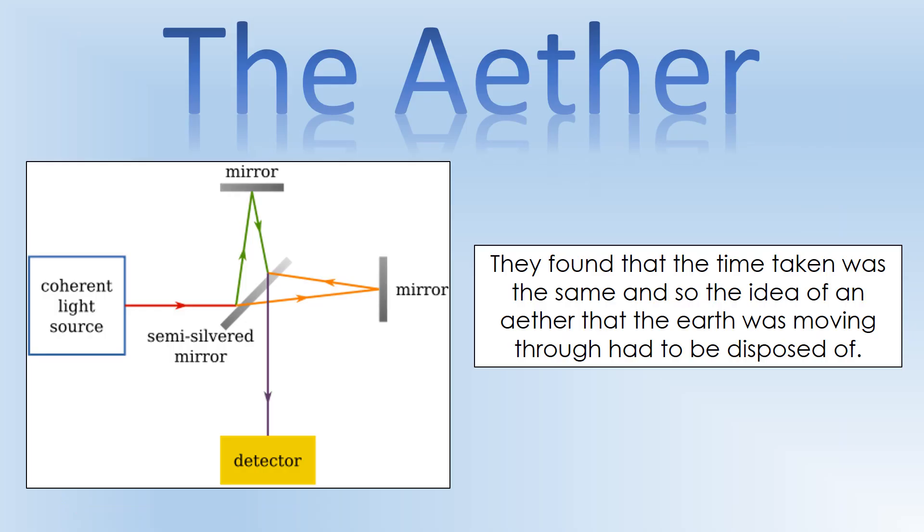What they did is they found out that the time taken was the same. So essentially they found out that light was traveling at the same speed in those perpendicular directions. And so they disposed of this idea of an ether that's permeating through space or a light wind passing through space that you could add or subtract the speed of light on.